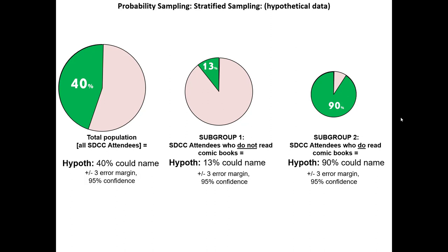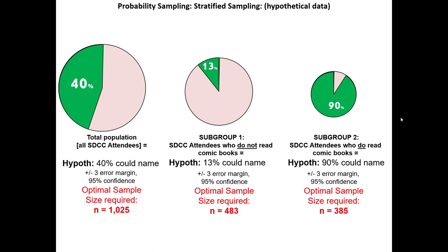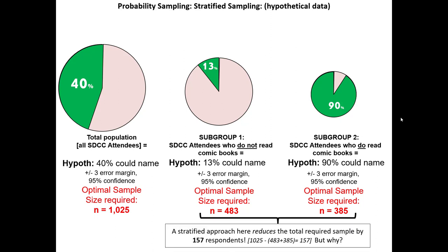The majority of people who do not read comic books cannot name the Riddler — a much more homogenous answer. Or those who do read comic books can identify him — again more homogenous — compared to the overall San Diego Comic-Con, which is a 40-60 split, much more heterogeneous. Across all three groups, if we only want an error margin of three percentage points at a 95% confidence interval and apply the optimal sample size formula, we'll find that we need to collect 1,025 individuals if we study the entire population. However, if we first split into two subgroups, we'll need sample sizes of 483 and 385 — somehow reducing our overall sample size by 157.